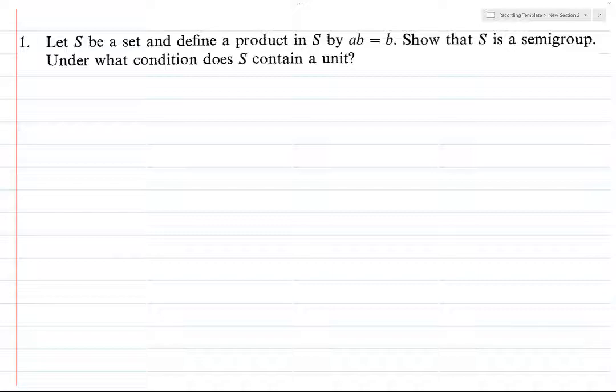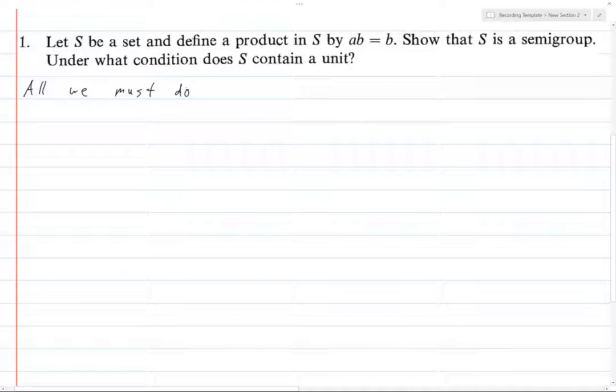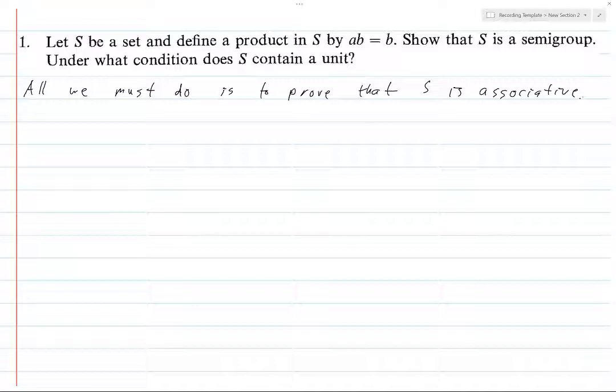We have this really simple semi-group. All we must do is prove that S is associative. When I say S here, I mean of course S endowed with this product, but that's a lot of words. Once you have associativity, that's what it means to be a semi-group—it's just a set with a binary operation that's associative.